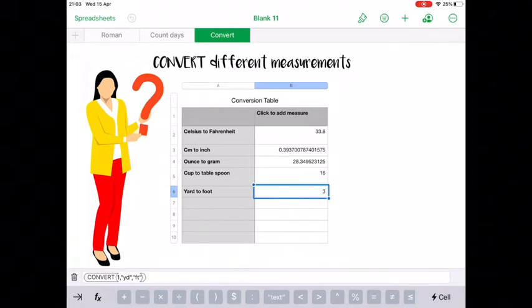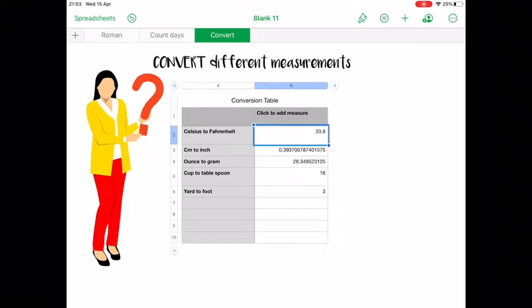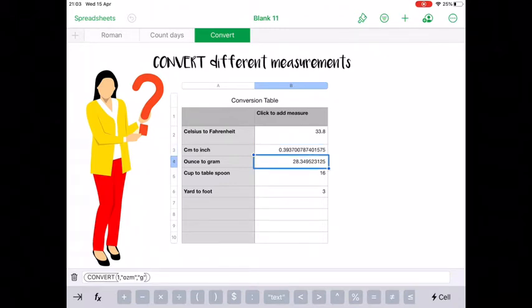Now I've got other examples here using exactly the same process, but with different codes. We've got Celsius to Fahrenheit, centimeters to inches, ounces to grams, and cups to tablespoons—which I did not know you could convert. That's going to make my cooking recipes much easier.